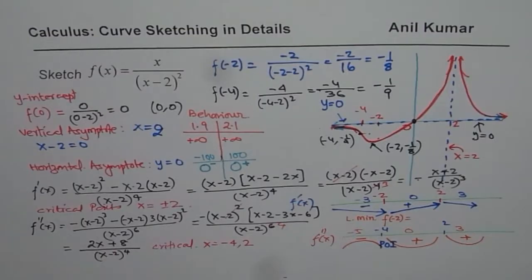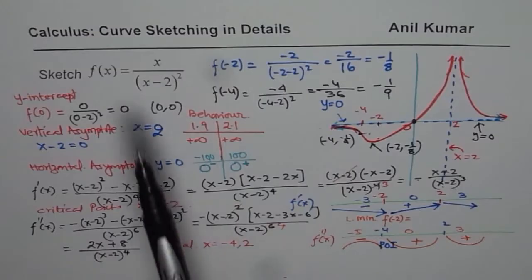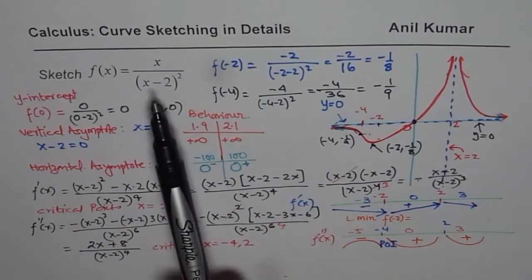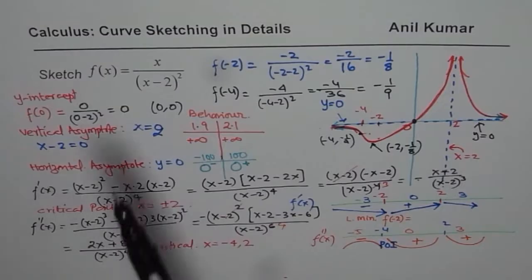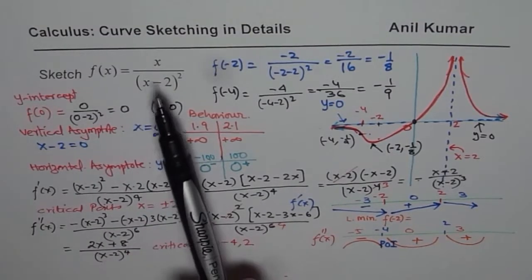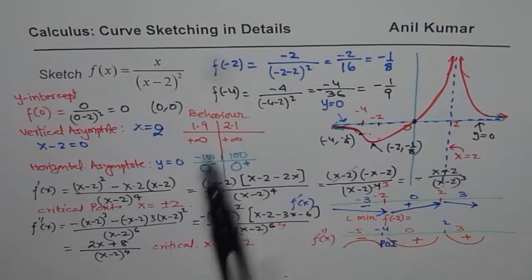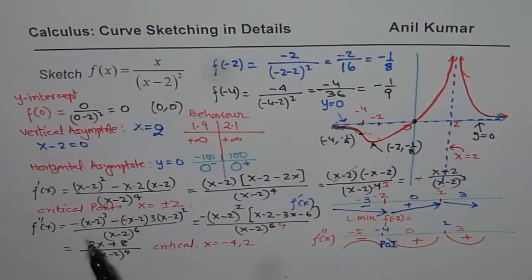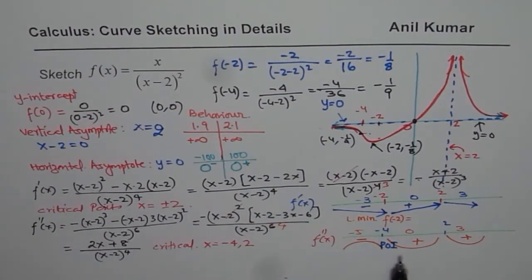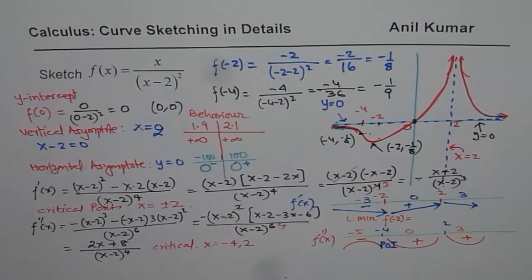I hope with this you understand how to sketch the graph of a function. Look at the equation itself — it gives you an idea of how to proceed. Find x and y intercepts first, then find asymptotes and behavior near them, then local maximum and minimum points, concavity, and points of inflection. Once you have these things in place, you can sketch a neat curve to represent the graph. Thank you and all the best.